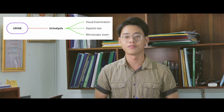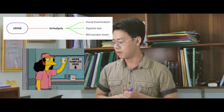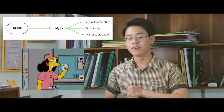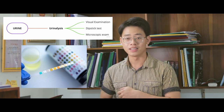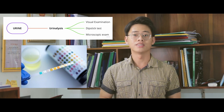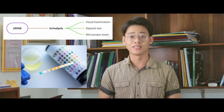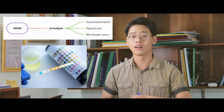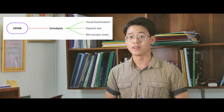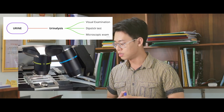Hello everyone, my name is Phuc and today I'm going to talk about a complete urinalysis. Urinalysis is made up from 'urine' and 'analysis.' A complete urinalysis is made up of three tests: the first is the visual exam, used to investigate the appearance of the urine by observation; the second is the dipstick exam, which consists of qualitative and semi-quantitative tests whose results are observed by watching color changes on the dipstick band.